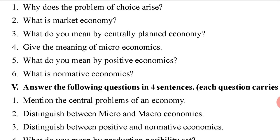Examples of microeconomics include per capita income and per head consumption. Fifth question: what do you mean by positive economics? Positive economics deals with scientific explanation of the working of the economy. Sixth question: what is normative economics? Normative economics studies what ought to be — what is good or bad, what is right or wrong.